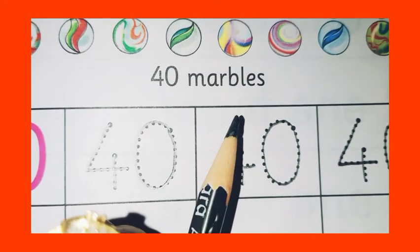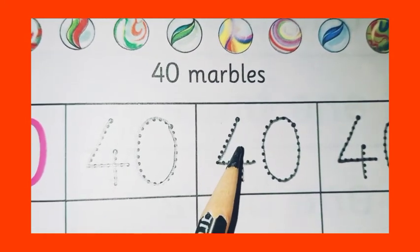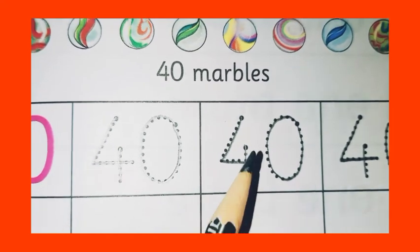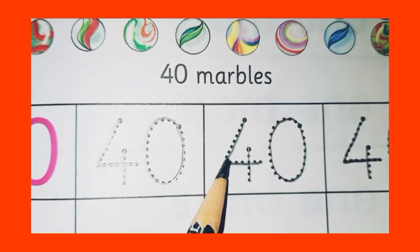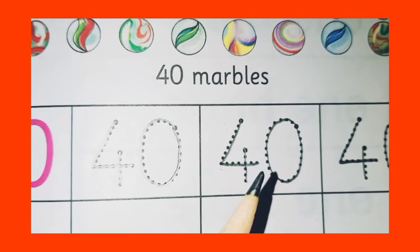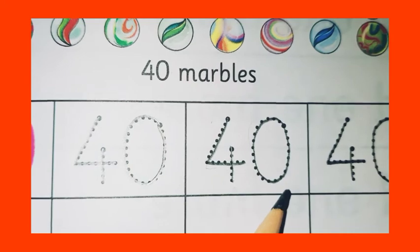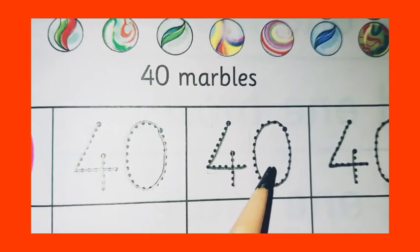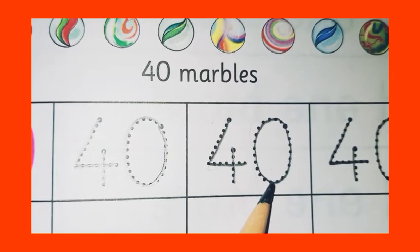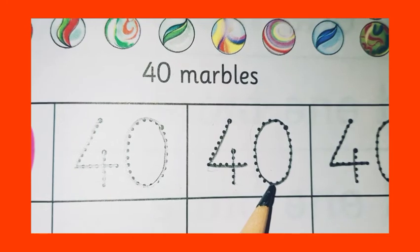Again we write. First of all we draw one standing line. Then we draw one slanting line and join one sleeping line. So this is our 4. Then we draw a circle. 40.